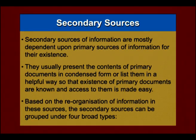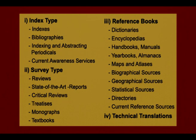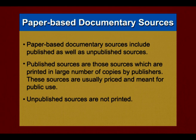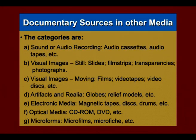Secondary sources of information mostly depend on primary sources for their existence. They usually present the contents of primary documents in condensed form or list them in a helpful way, so that the existence of primary documents is known and access to them is made easy. There are four categories of secondary sources: category one is index type, category two is survey type, category three is reference books, and category four is technical translations. Paper-based documentary sources include published as well as unpublished sources. Other documentary sources include sound or audio recordings, visual images, artifacts and realia, electronic media, optical media, and microforms.